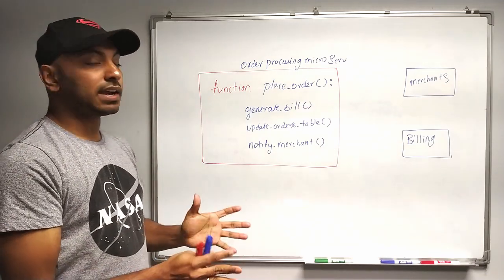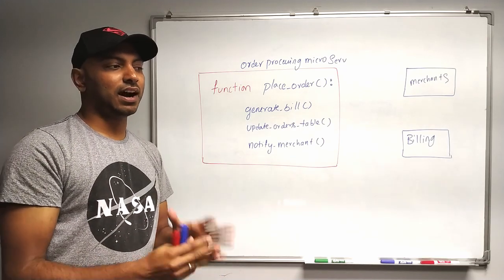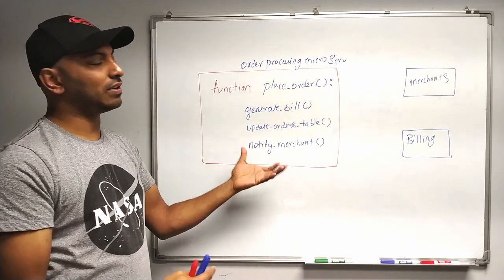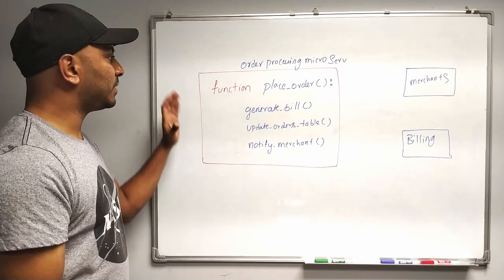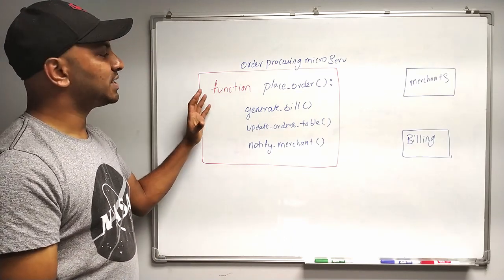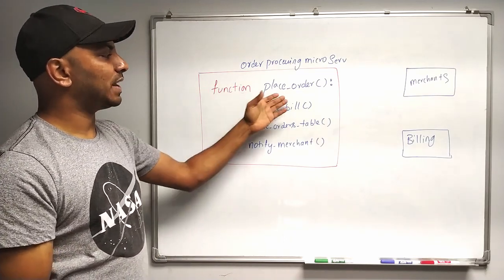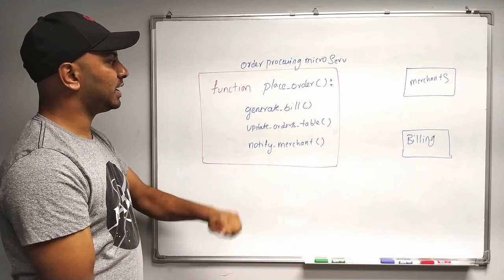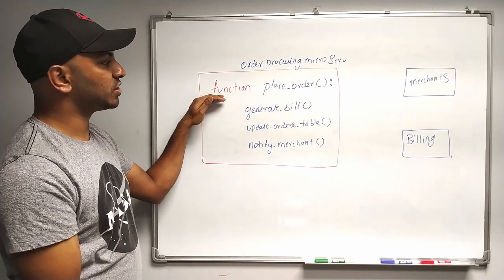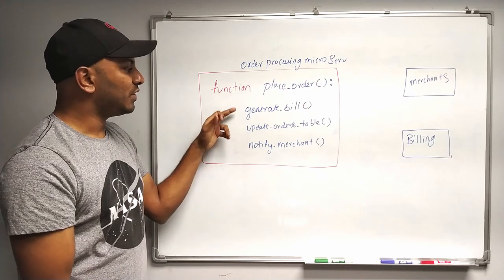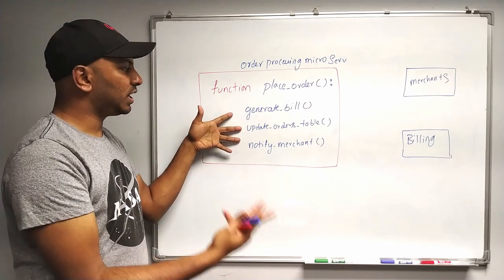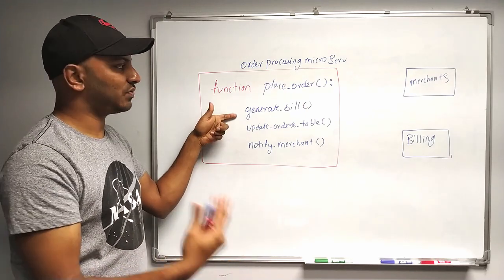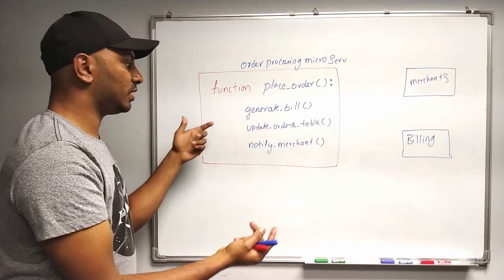Let's understand how it used to be in monolithic architecture and then understand how it will be in microservices. For example, this would be a function which handles placing an order. In the monolithic case, it would have been much simpler — there is a function called place order with three different functionalities. The first one is generating a bill as soon as we place an order.